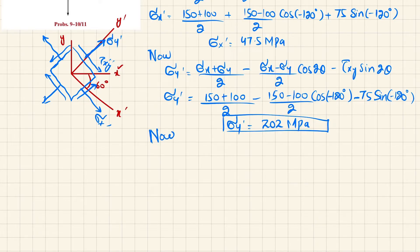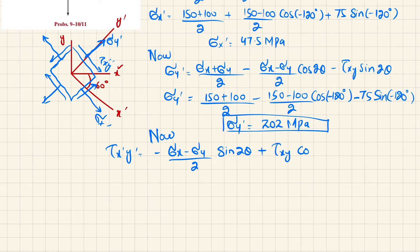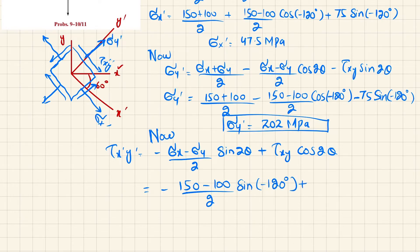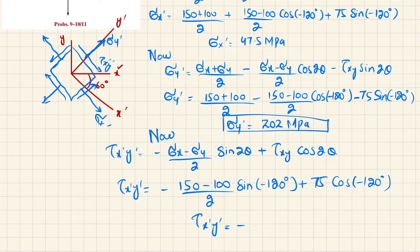For tau x dash y dash, the formula is: tau x dash y dash = −(sigma x − sigma y)/2 · sin(2θ) + tau xy · cos(2θ). Substituting: −(150 − 100)/2 · sin(−120°) + 75 · cos(−120°). Tau x dash y dash comes out to be minus 15.8 megapascal.